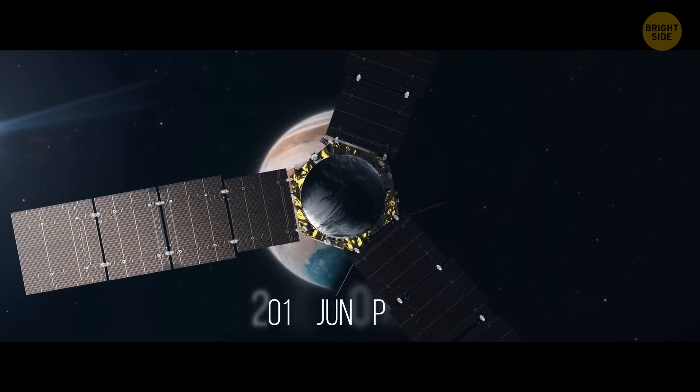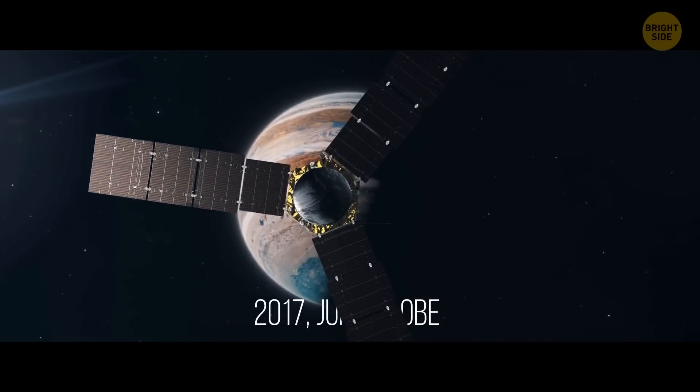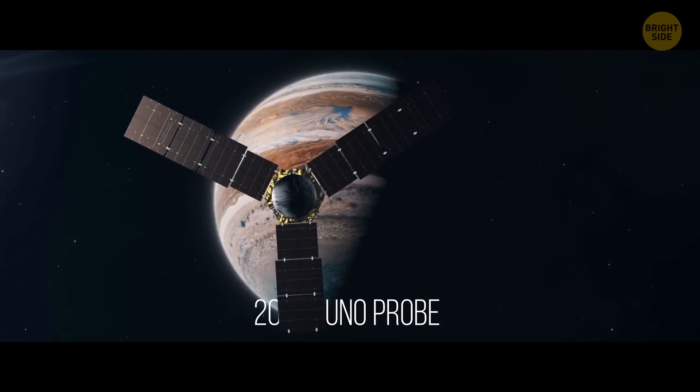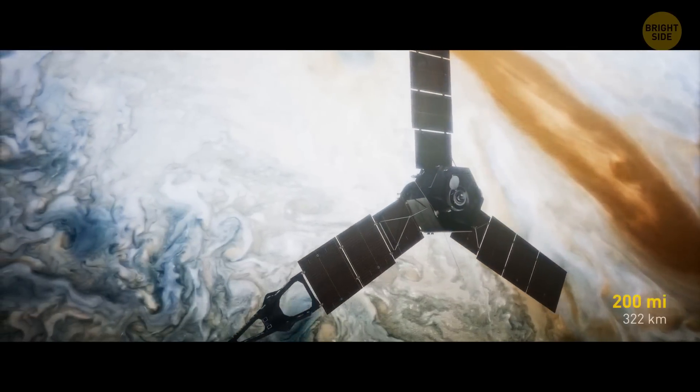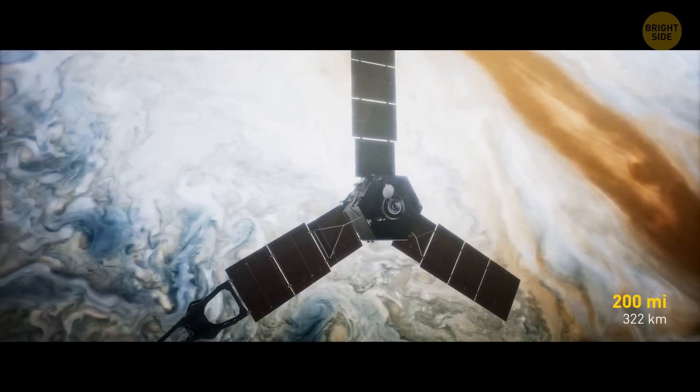In 2017, NASA's Juno space probe managed to collect lots of data about the red spot. And it turned out that this monster of a storm went more than 200 miles down into the planet's atmosphere.